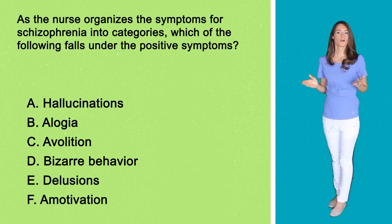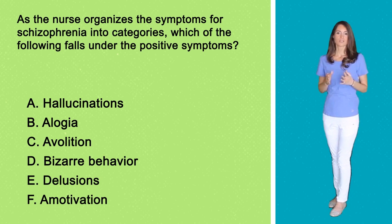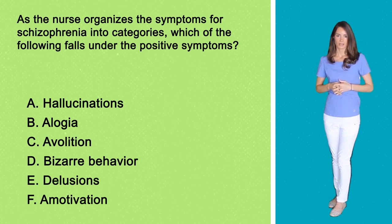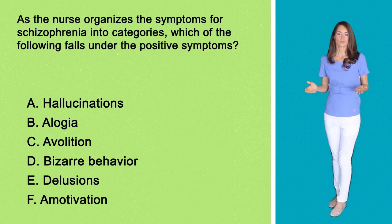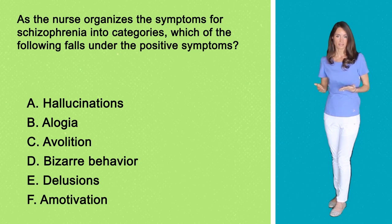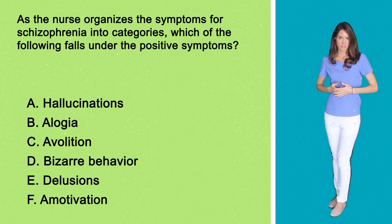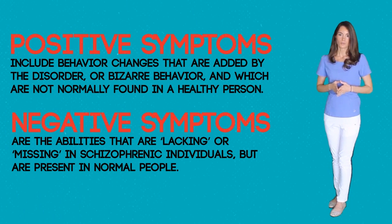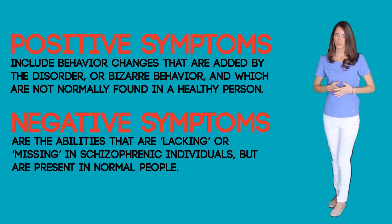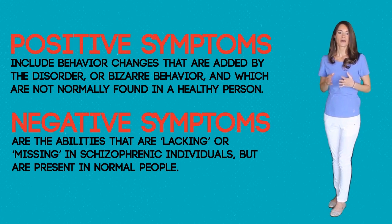Here are the answers. Signs and symptoms for schizophrenia may differ in every patient, but all of the symptoms fall into three categories: positive, negative, and cognitive symptoms. Positive symptoms include behavior changes that are added by the disorder — bizarre behaviors not found in a healthy person.